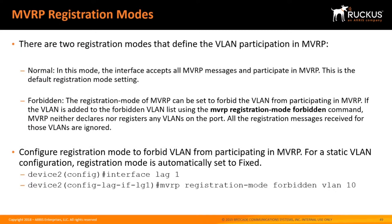There are two registration modes. Normal is the default — it accepts all MVRP messages and participates in MVRP. The other is forbidden mode. If a VLAN is added to the forbidden VLAN list using the VLAN registration mode forbidden command under the interface, MVRP neither declares nor registers any VLANs on that port — all registration messages received for those VLANs are ignored. Basically, for specific VLANs, you can say you don't want them registered or declared on that interface. If there's a particular VLAN you want forbidden, you can add it to the list, and you can also specify a range.